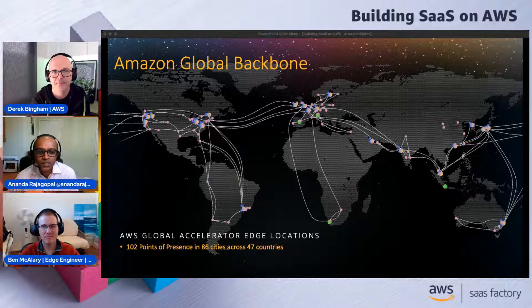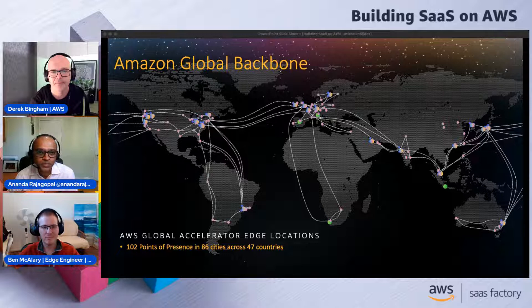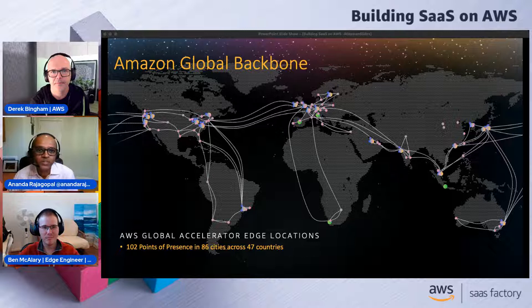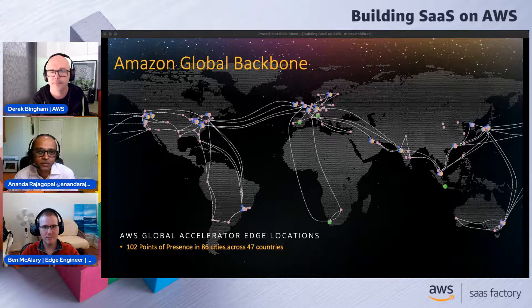What you see here is the Amazon global backbone — up to 102 points of presence spread across 86 cities in 47 countries. We've added six this year and continue adding more every year. Every time a new point of presence is added, we're taking the Amazon network closer to where your clients come in from — whether you're a game developer, a SaaS provider, or offering applications to users far from your region.